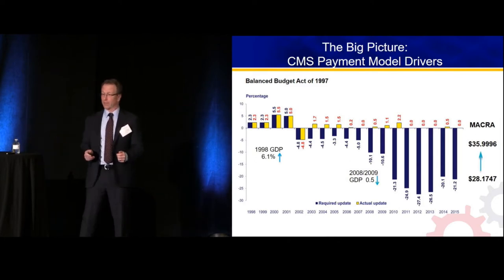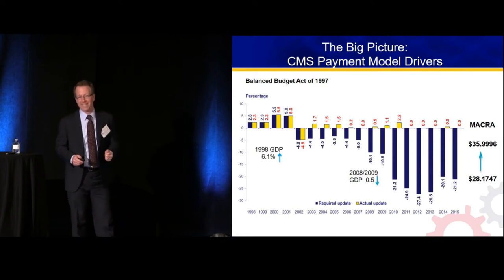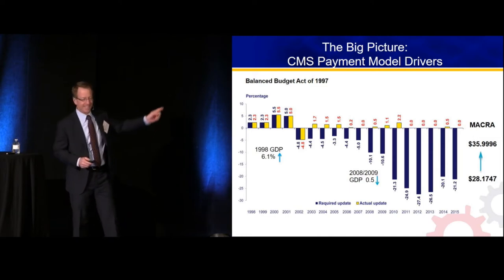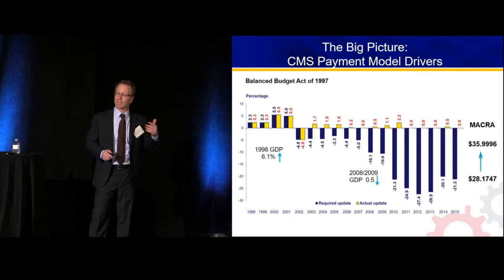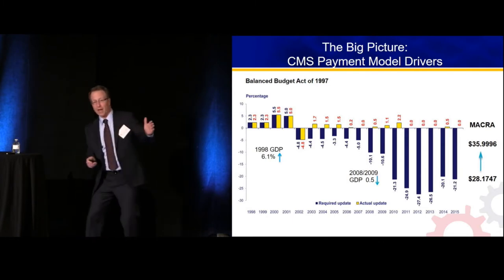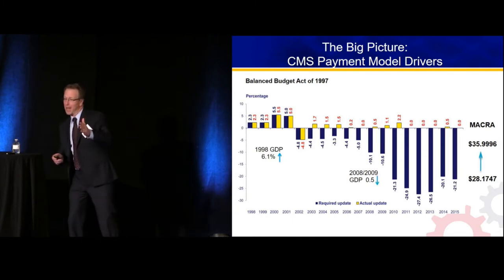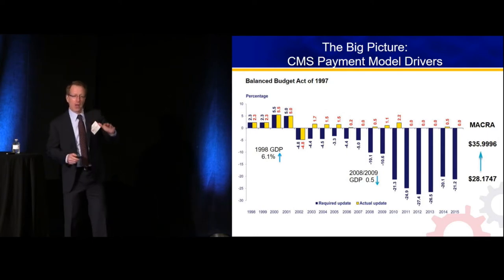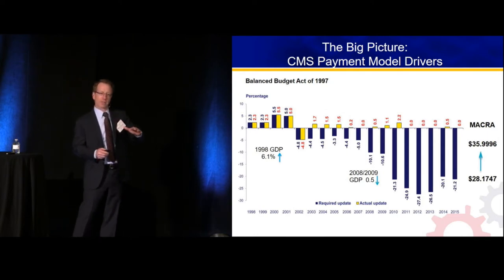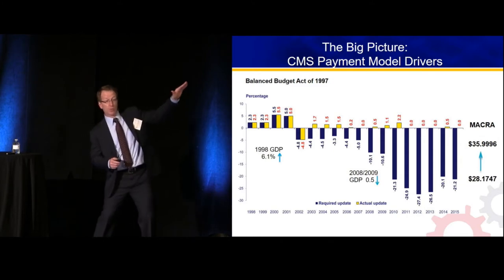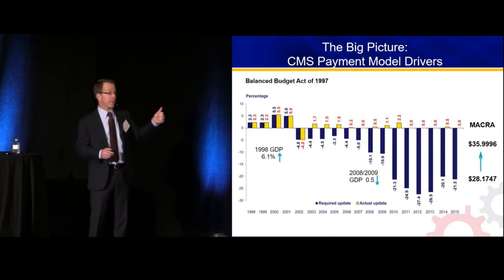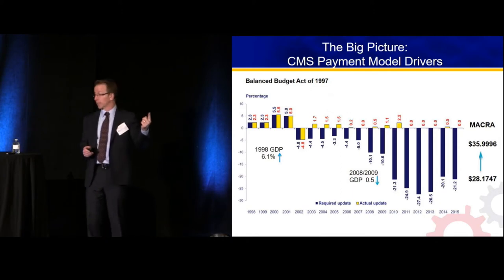That worked great because we were partying like it was 1999, and GDP was growing at 5% or 6% a year. Then we enter this period of time in the early 2000s where Medicare expenses started to grow even more significantly. The slope of that curve was a little bit steeper due to expensive medications.